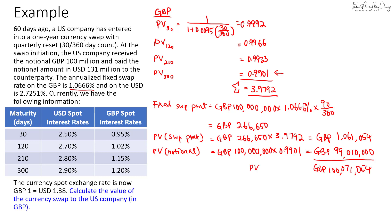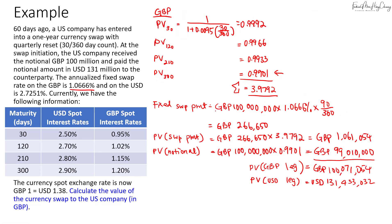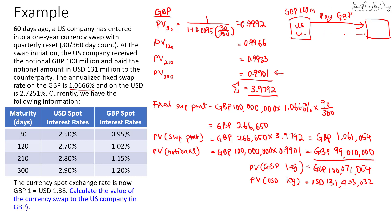Summing the PV of the swap payments and the notional, the total PV of the pound leg is 100,071,054 pounds. To recap: the PV of the US dollar leg is 131,433,032 USD. From the perspective of the US company, every quarter they pay interest in pounds — because they are holding the 100 million pounds — and receive interest payments in US dollars, because the counterparty is holding the 131 million US dollars.